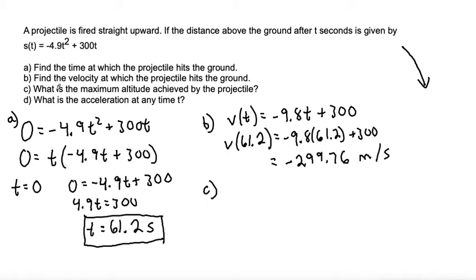So for part C, it asks what is the maximum altitude achieved by the projectile? So the maximum altitude would happen when it hits the vertex of the parabola. And we can find that by using the velocity function and setting the velocity equal to 0. That would be the critical point where the velocity equals 0. So we get 0 equals negative 9.8 t plus 300.